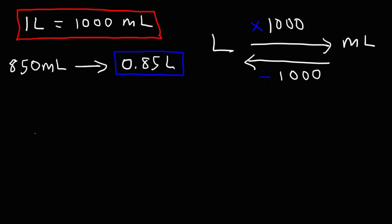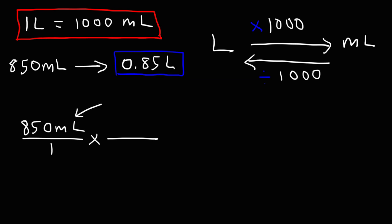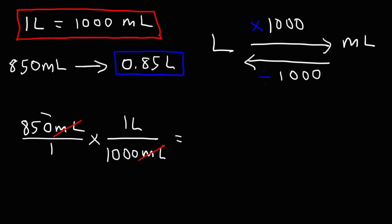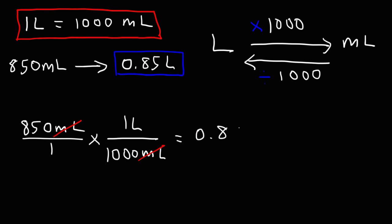Now how can we show our work to get this answer? Start with what you're given — the 850 milliliters — and set it up as a fraction. In the second fraction use your conversion factor. Since milliliters is on the top of the first fraction, put milliliters on the bottom of the second fraction so the units cancel. The other part goes on top. So it's 850 divided by 1,000, which is 0.85 liters.